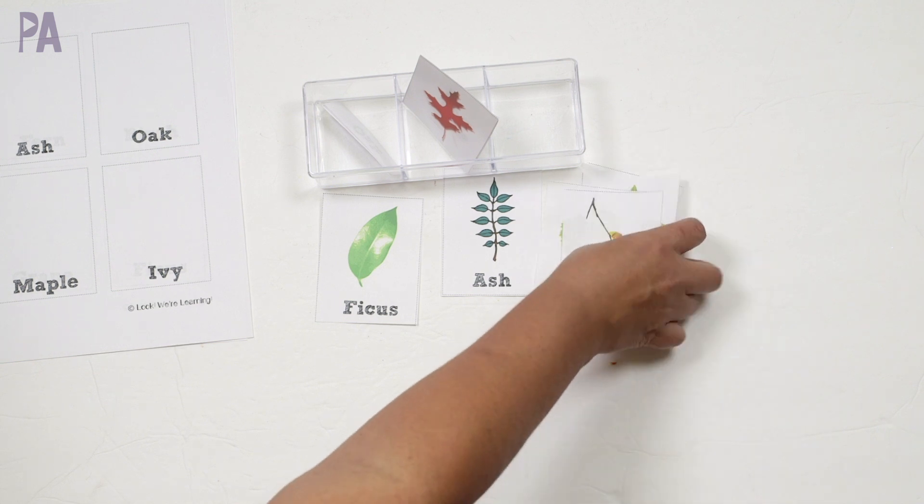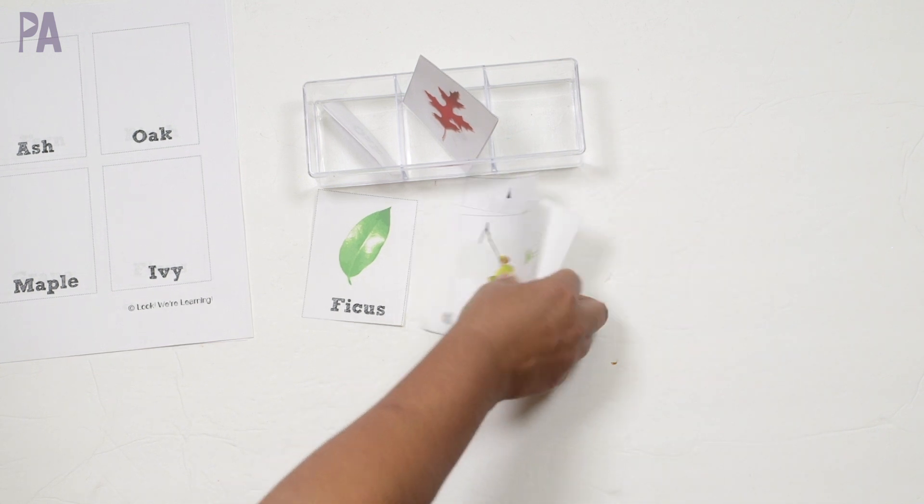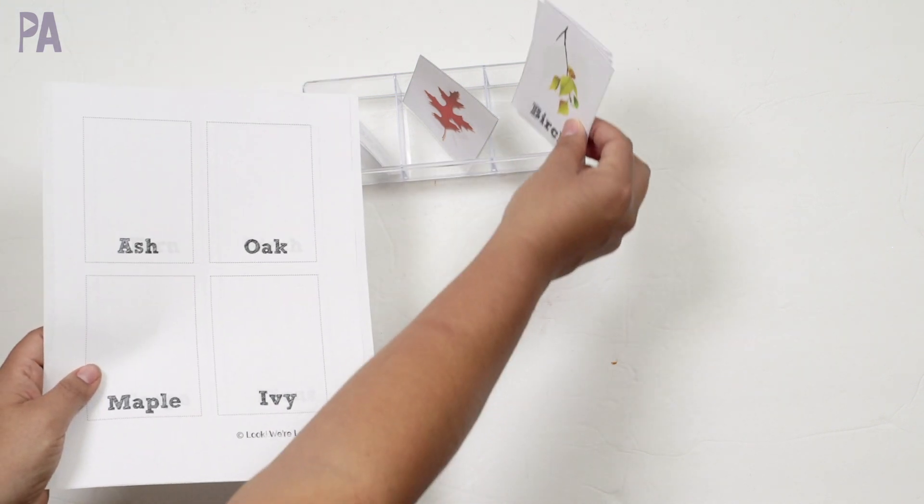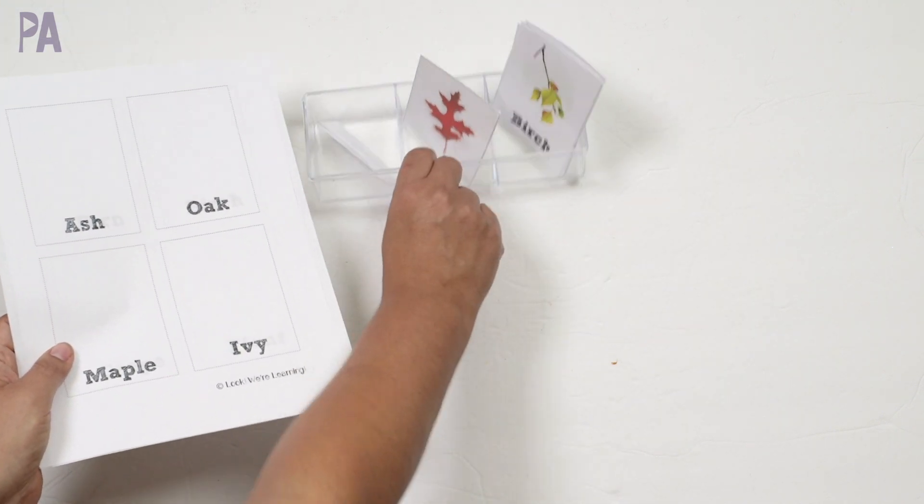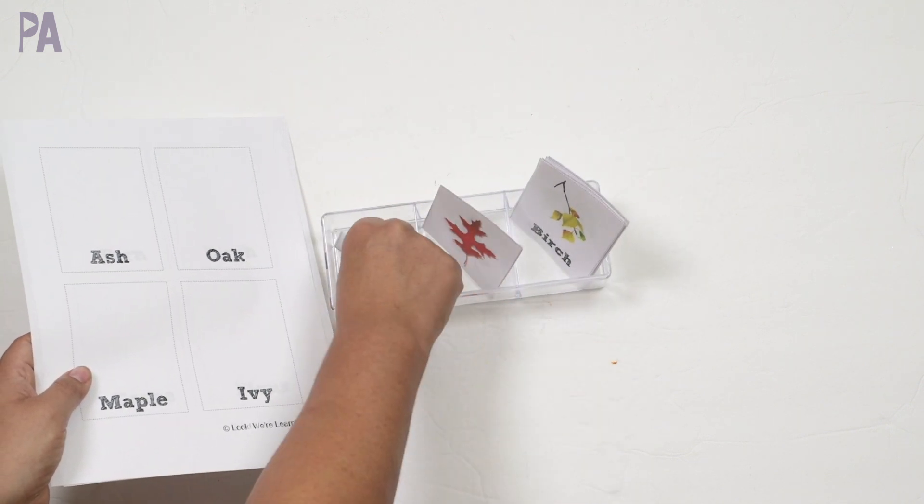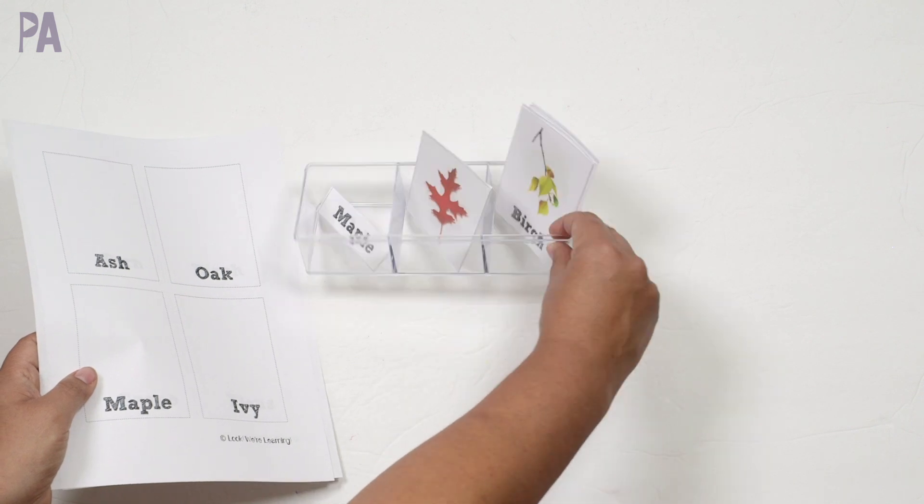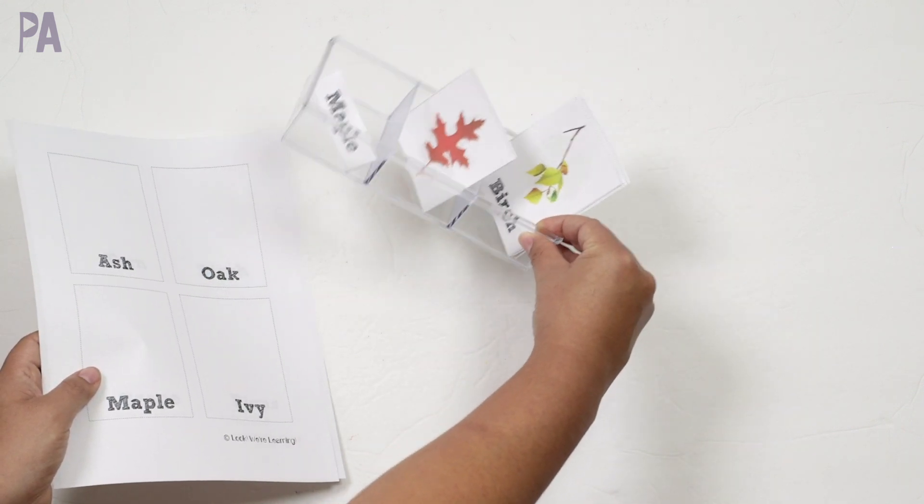Once again, this one will be down below in the description box. You can go and print it off right away and you can use it in many different ways. I also recommend laminating these so that you can get some use out of them over the years. If you're wondering, this little container, I think this one came from the Target Dollar section or maybe it was Dollar Tree, but you can pretty much find a lot of these kind of containers in Dollar Tree.